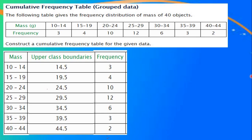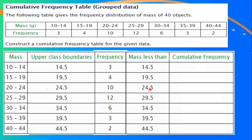To write the cumulative frequency table, we are going to consider these upper class boundaries and write the next column as: less than 14.5, less than 19.5, less than 24.5, and so on. For the first one, the cumulative frequency is 3 itself. For the second one — mass less than 19.5 — it is 3 plus 4, which is 7.